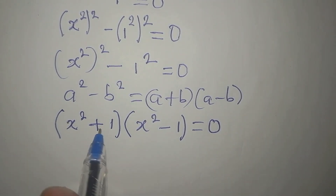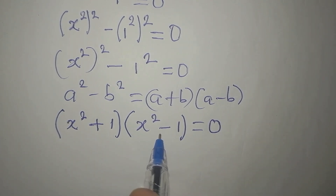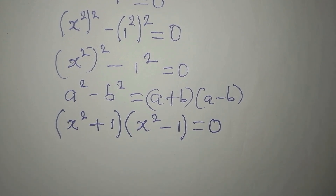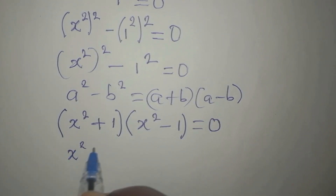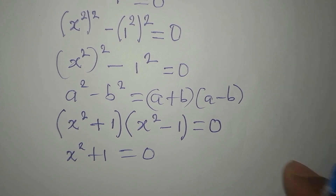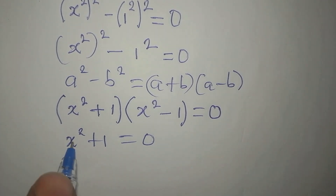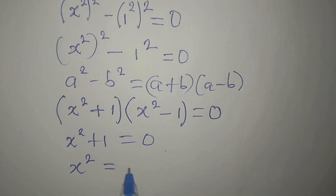Everything equals zero, which means either this equals zero or this equals zero — both can be equated to zero. We equate the first factor: x squared plus 1 equals zero, then take the 1 to the other side, giving us x squared equals negative 1.